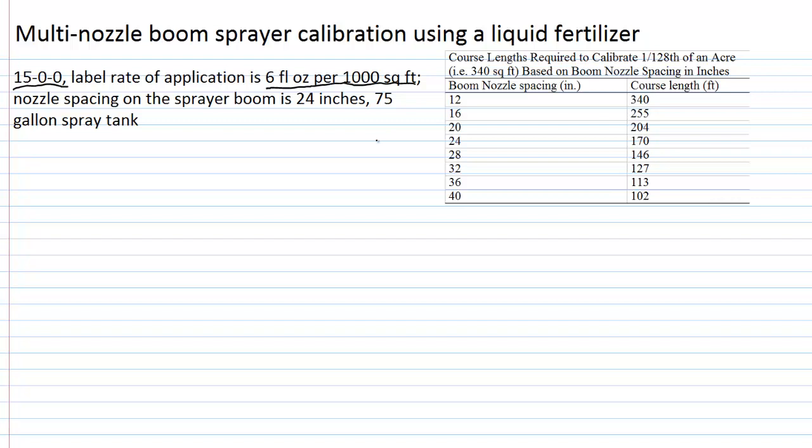When calibrating a multi-nozzle boom sprayer, one of the easiest methods of calibration is what's called the 1-128th of an acre method. With this method, you have to have a uniform spacing of nozzles on the sprayer boom. In this case, we do. We've measured them, and we've got 24-inch uniform spacing of nozzles. Using this information in this table, we'll determine what the course length is that allows us to cover an area of 340 square feet.